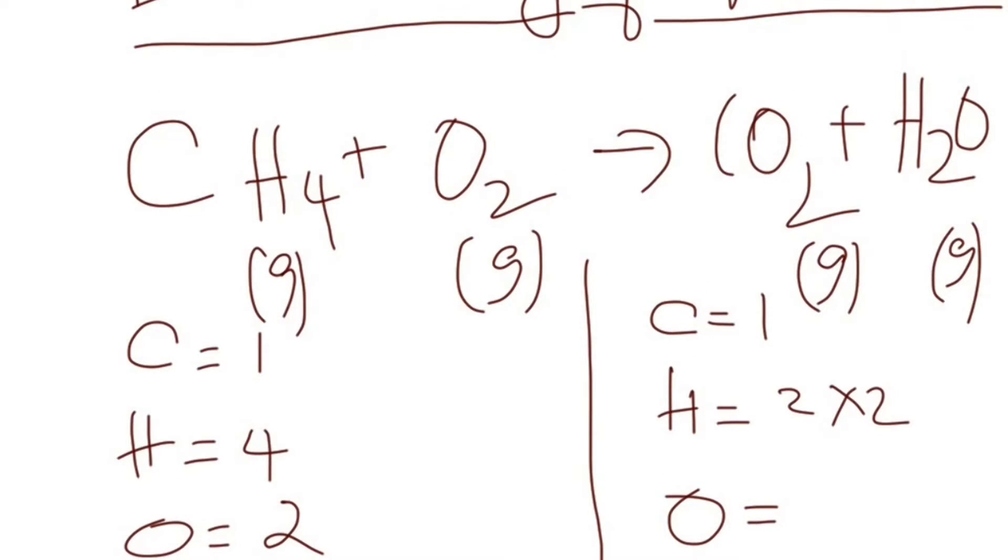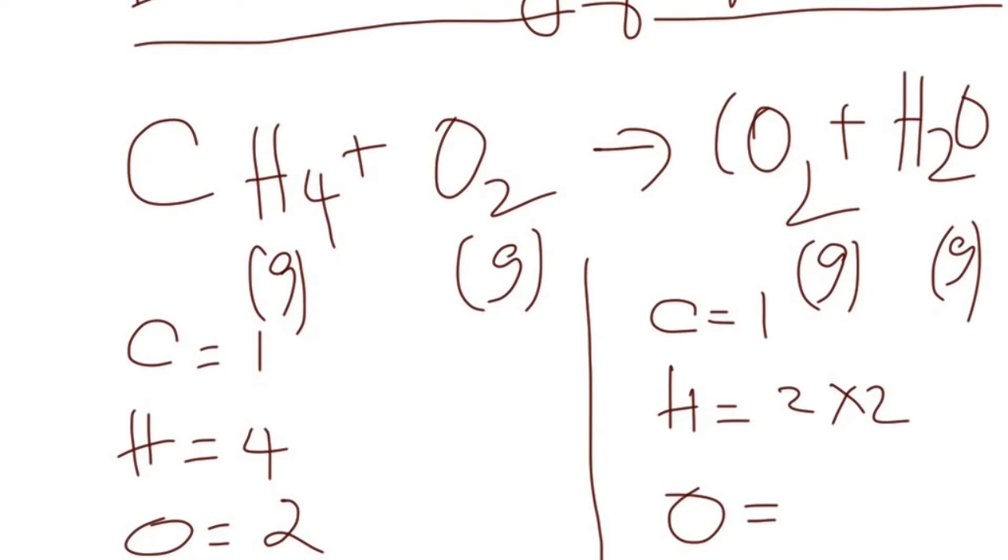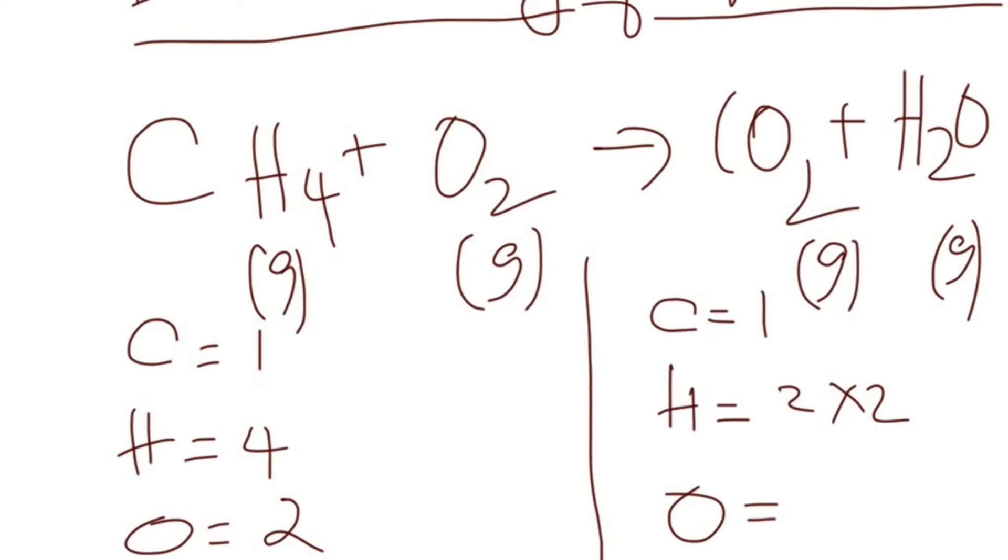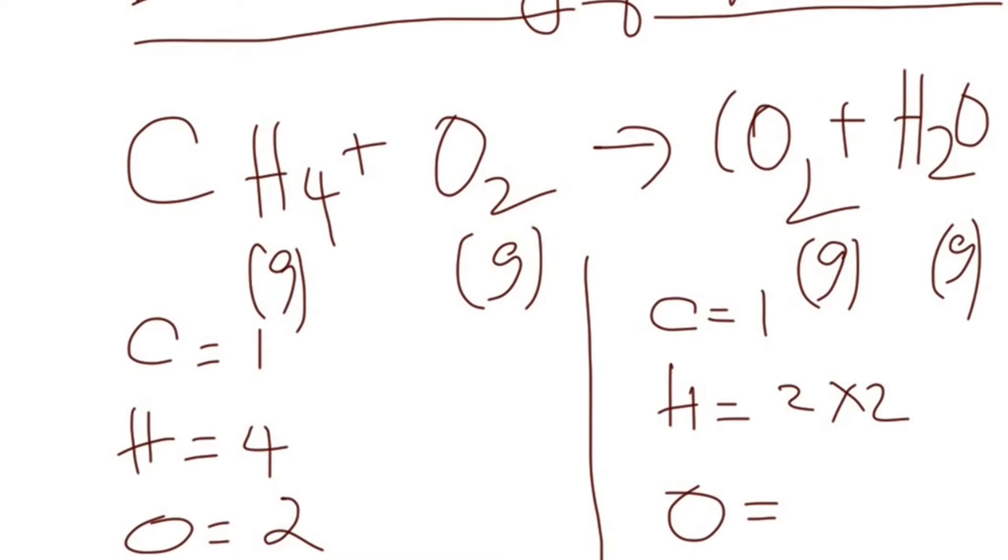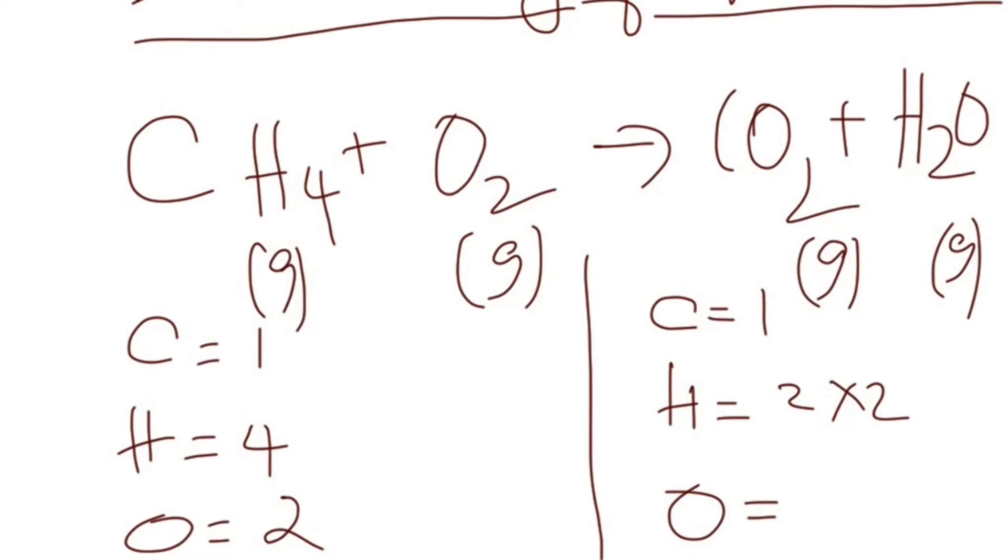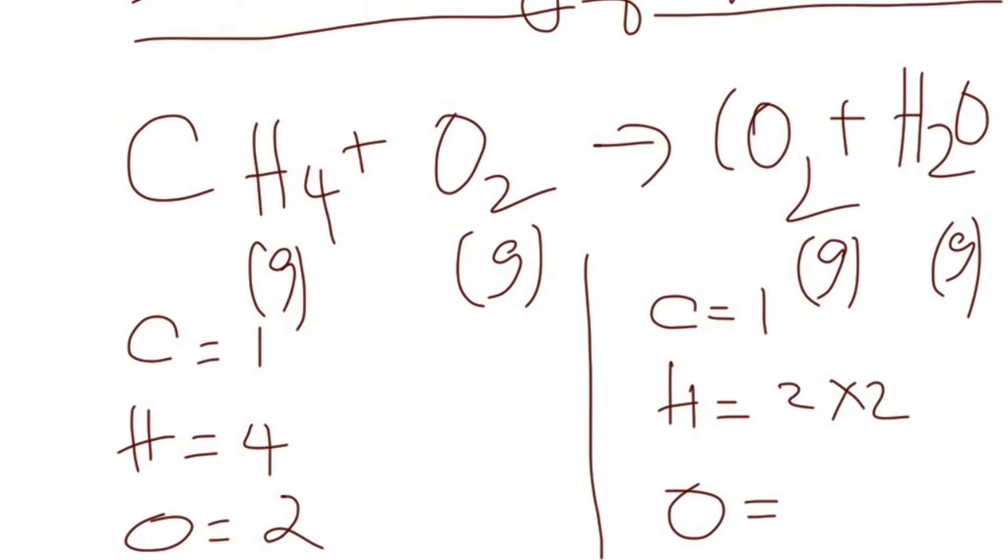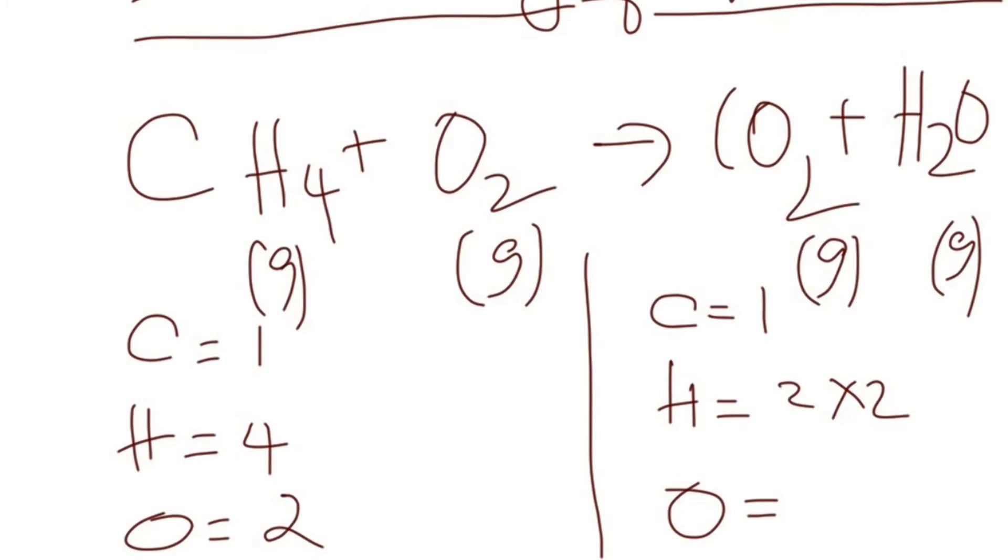The next thing to do is count the atoms on the left and the right. We have one carbon on the left and one carbon on the right. Four hydrogens on the left and two hydrogens on the right, so we have to balance hydrogen. Oxygen we have two on the left and three on the right.